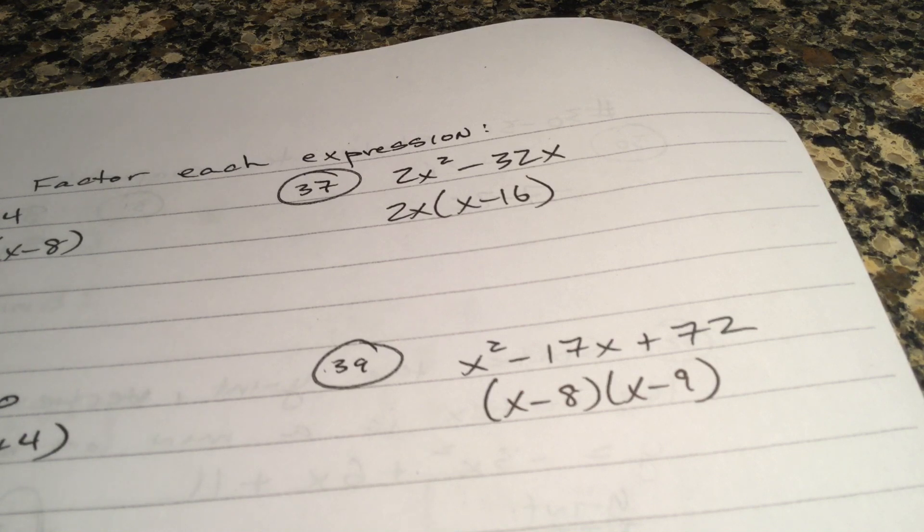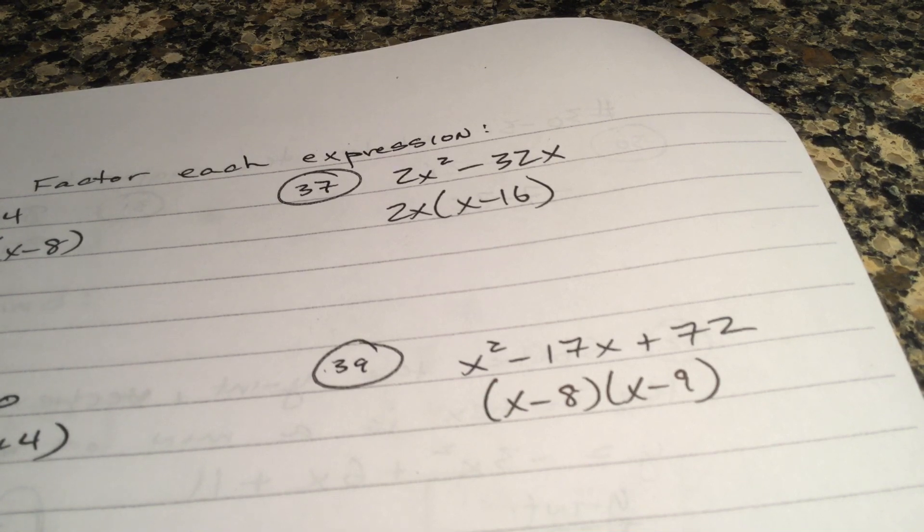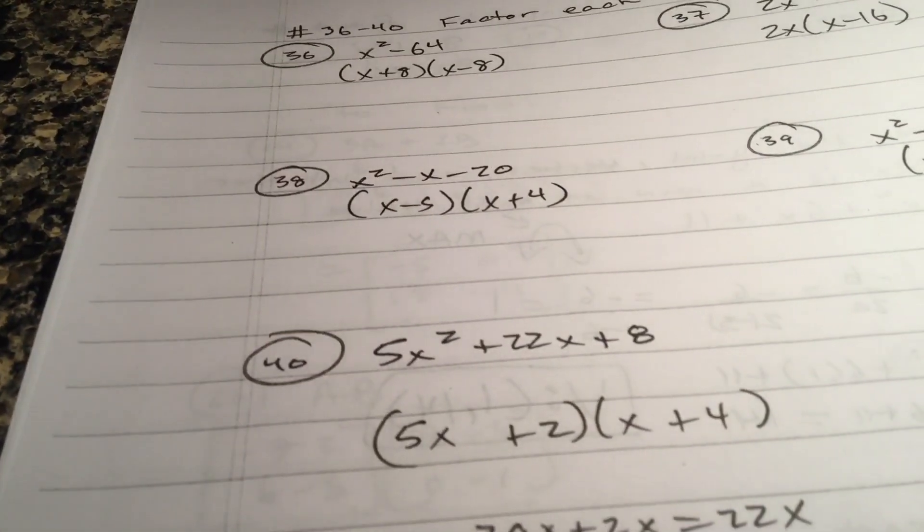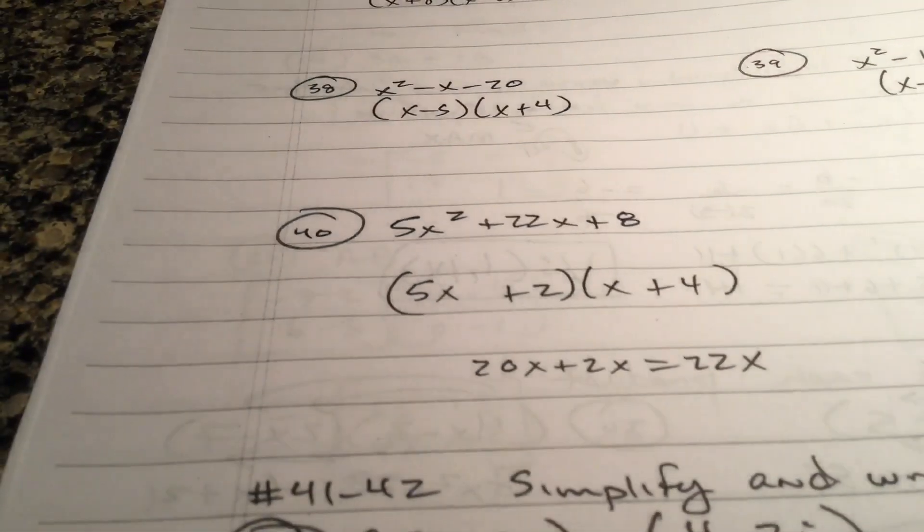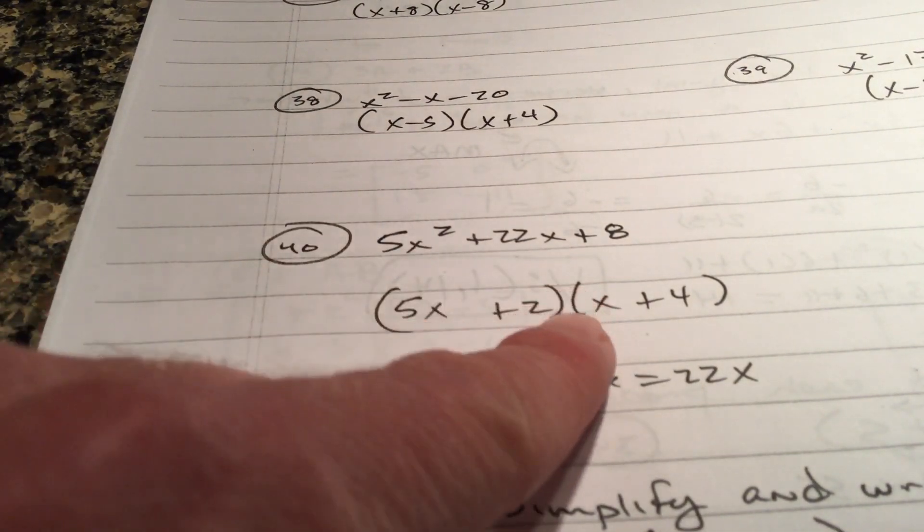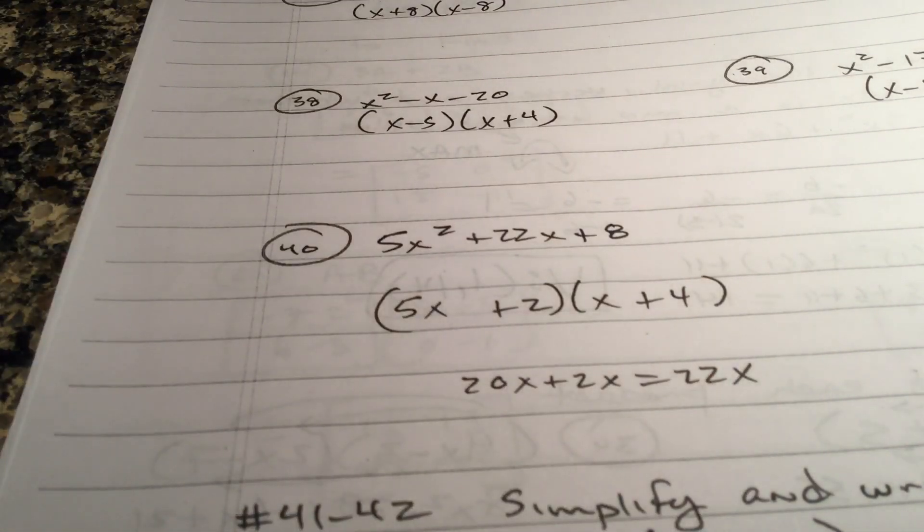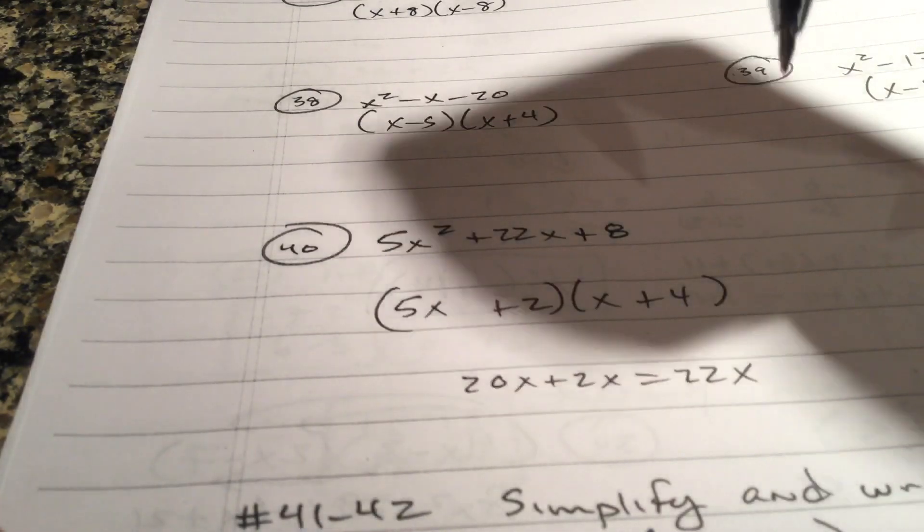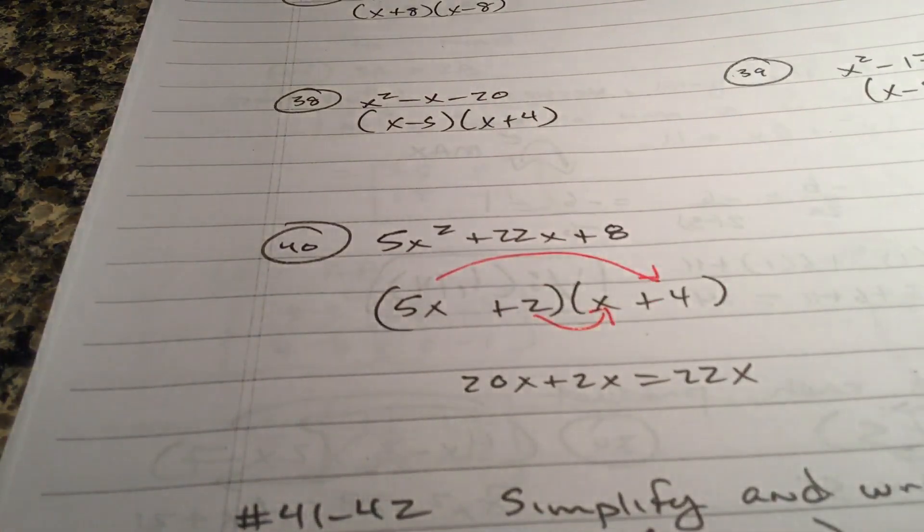Okay. Factor out the 2x. Then you're just left with the x minus 16. That's it. That's all you can do. There's no constant. There's no what multiplies to this adds to this. It looks like it's going to be different than two perfect squares, but x is not squared. Okay. x minus 5 x plus 4 on 38. 39. x minus 8. x minus 9. Here, guess and check. Only one way to get 5. 5 and 1x. So everything's got to be positive. Plus, plus. So put the 2 there, the 4 there. And then, you know, this right here is the 20x. And that right there is the 2x. That's 22x.